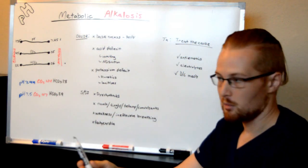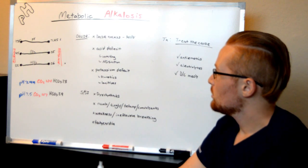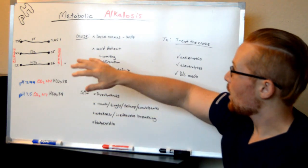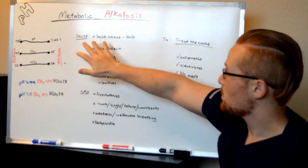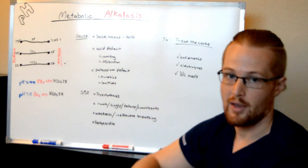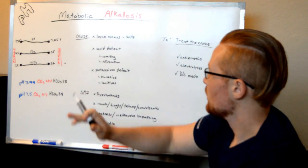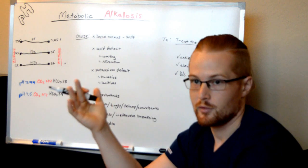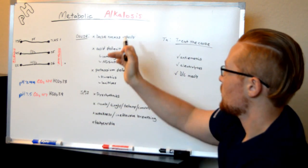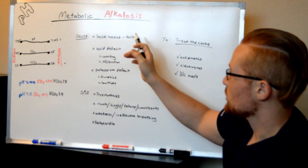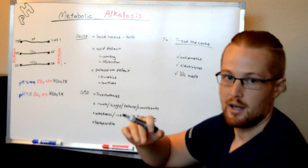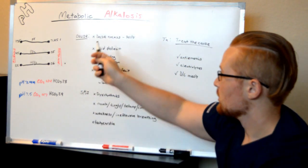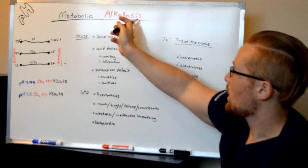So what causes metabolic alkalosis? You either have too much alkalotic agents, too much base, or not enough acid. What can cause too much base? If a patient is receiving medicines such as sodium bicarb, whether PO or intravenously, and they end up getting too much, that can cause too much base and they're alkalotic.